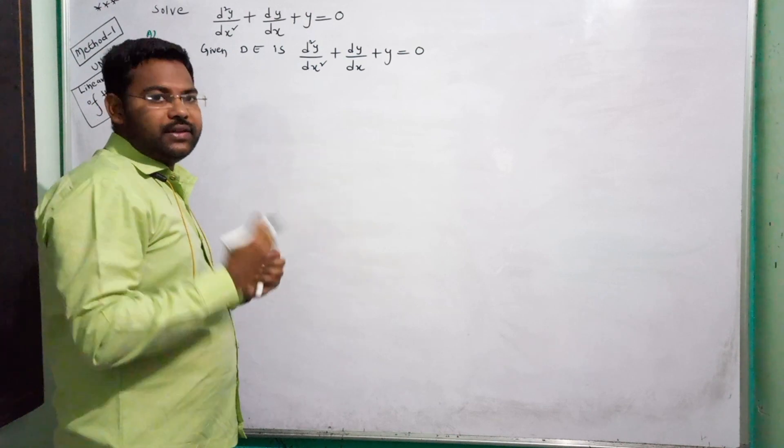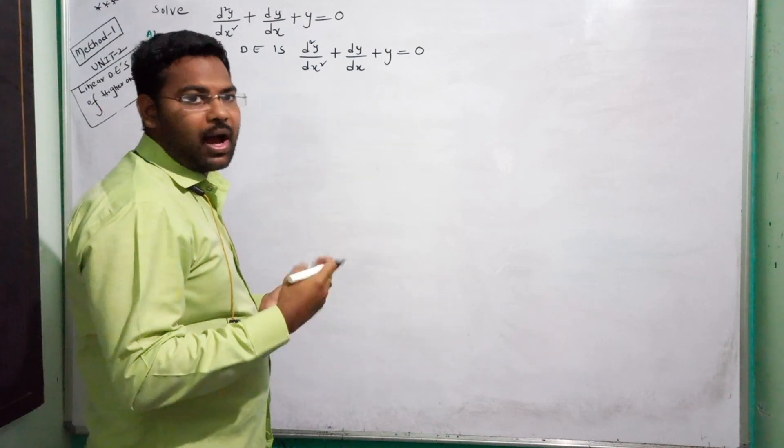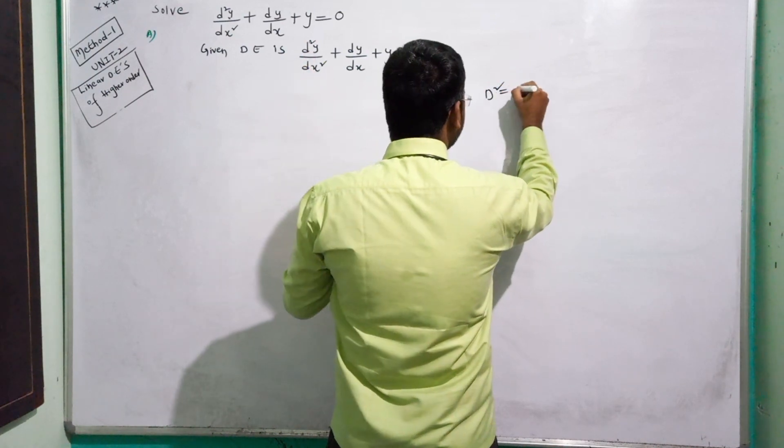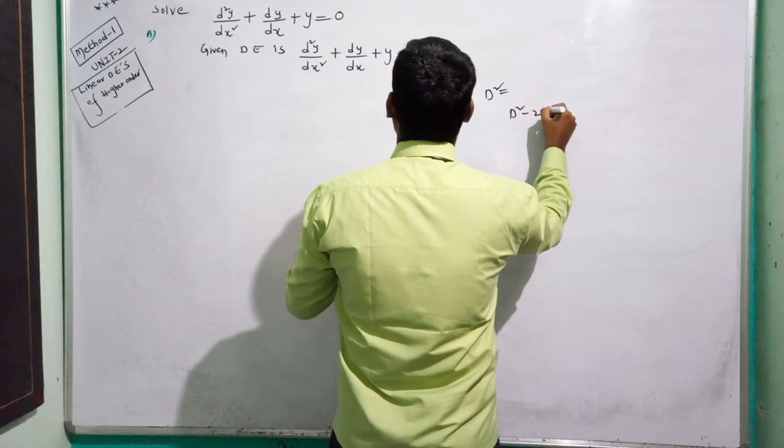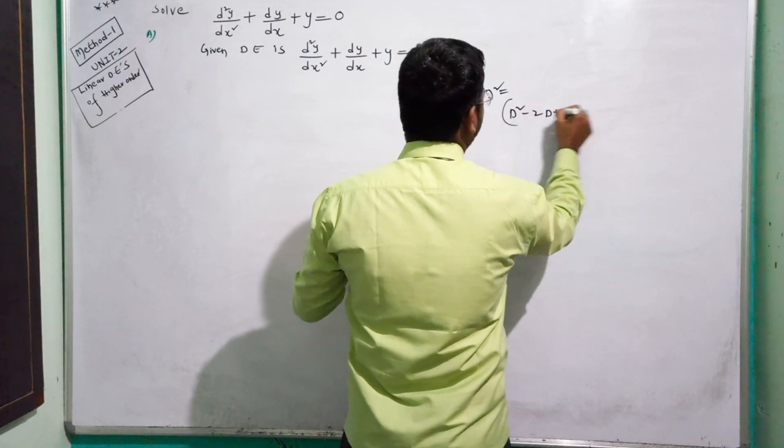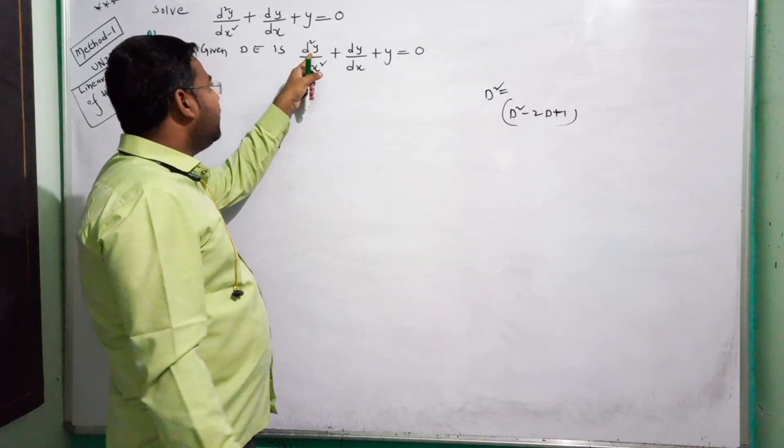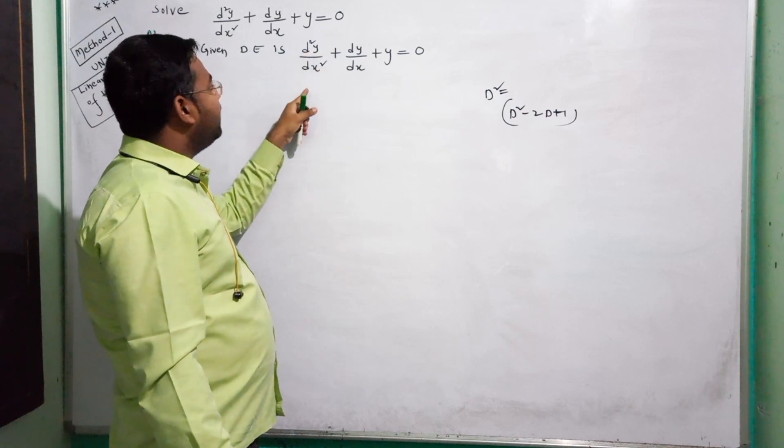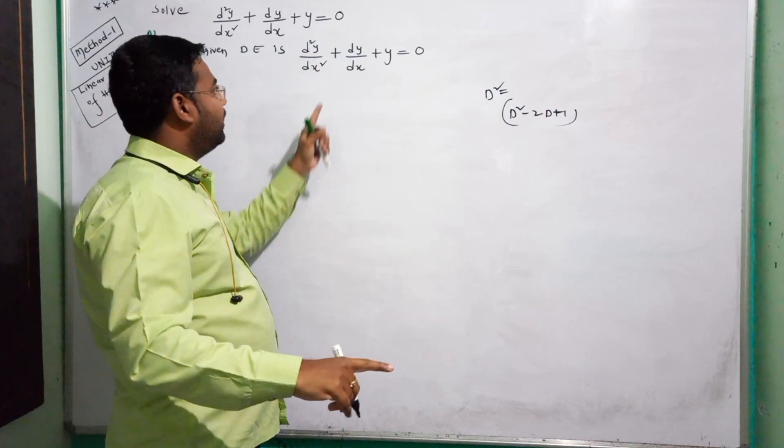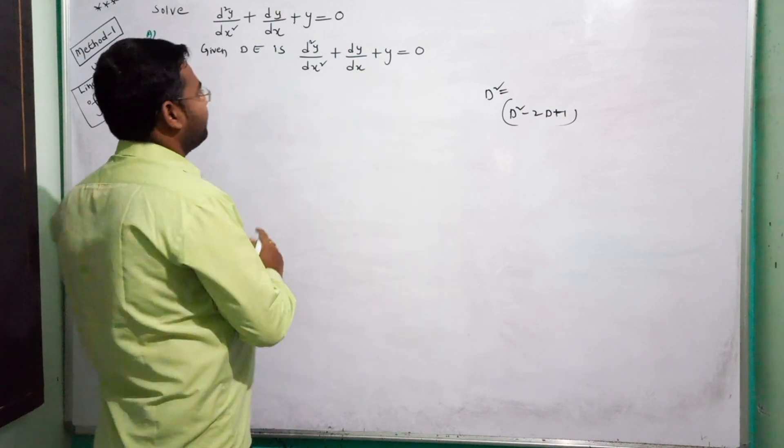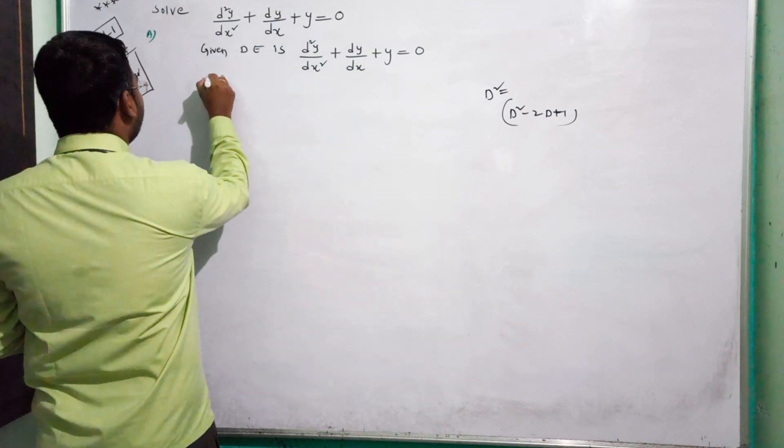Now, the differential equation in operator form. Operator form is capital D squared. Here, capital D squared is d squared by dx squared. Capital D is d by dx. So, operator form.